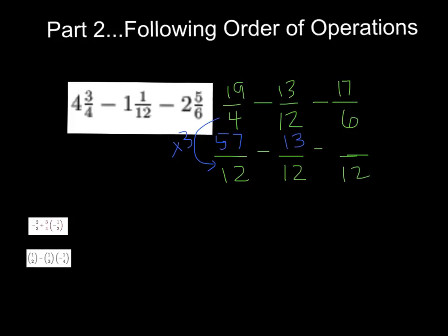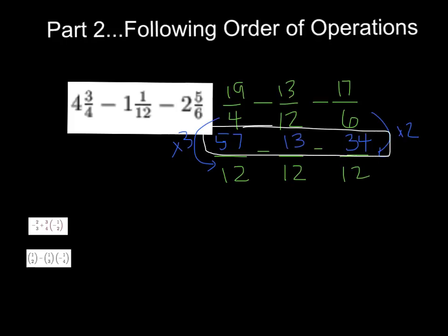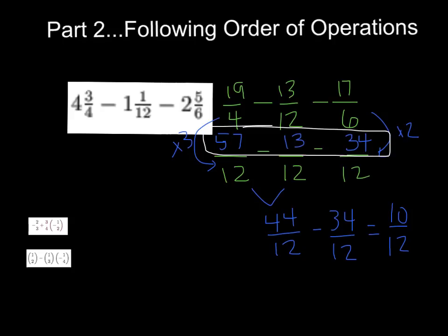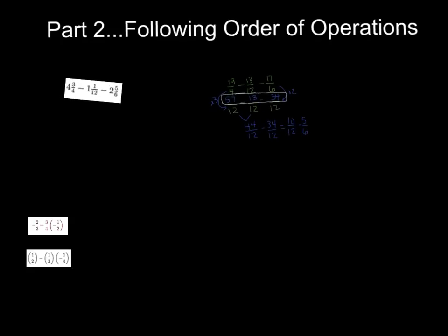Now we need a common denominator. Since 12 is a multiple of 4 and 6, the common denominator is 12. 4 times 3 is 12, so 19 times 3 is 57. The 13 twelfths stays the same. 6 times 2 is 12, so 17 times 2 is 34. Following order of operations left to right: 57 minus 13 is 44, then 44 twelfths minus 34 twelfths is 10 twelfths. Dividing by 2 gives 5 sixths as our final answer.